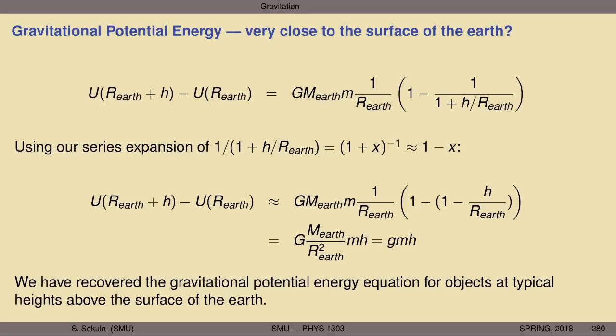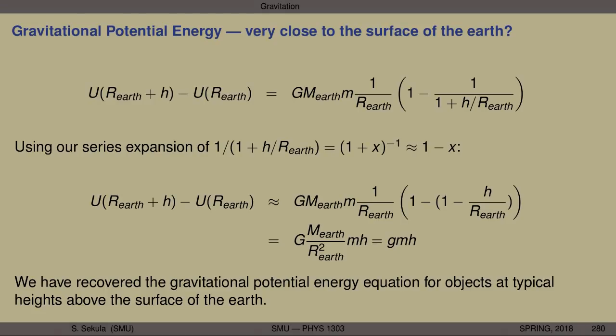This is incredible. We no longer have to assume that g is constant — we can take into account the fact that it changes with altitude and still do potential energy calculations. Thanks to the law of gravity giving us the force between two objects of mass m1 and m2 separated by distance r, we can now exactly write an equation for the potential energy at any distance between the objects. Just by making a reasonable approximation with this series expansion, we've recovered exactly the old formula for potential energy of an object of mass m at height h above the surface of the Earth.